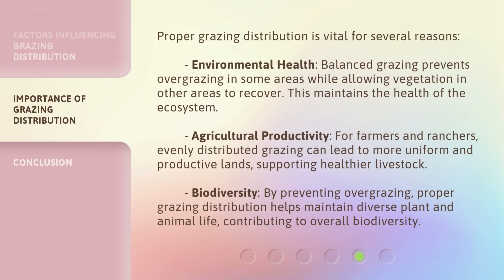Proper grazing distribution is vital for several reasons. Environmental health: balanced grazing prevents overgrazing in some areas while allowing vegetation in other areas to recover, maintaining the health of the ecosystem. Agricultural productivity: for farmers and ranchers, evenly distributed grazing can lead to more uniform and productive lands, supporting healthier livestock. By preventing overgrazing, proper grazing distribution also helps maintain diverse plant and animal life, contributing to overall biodiversity.